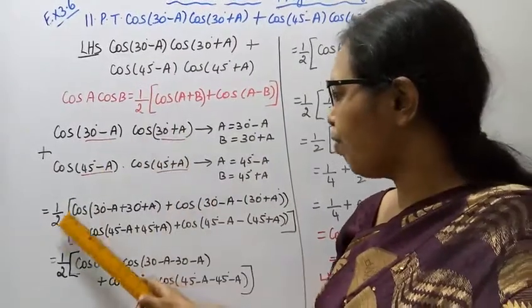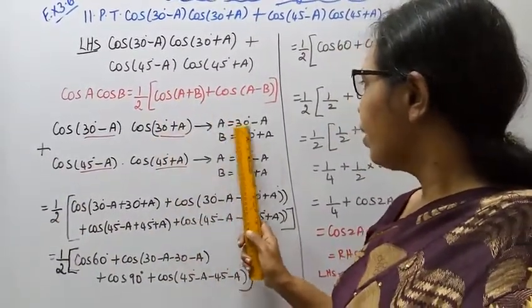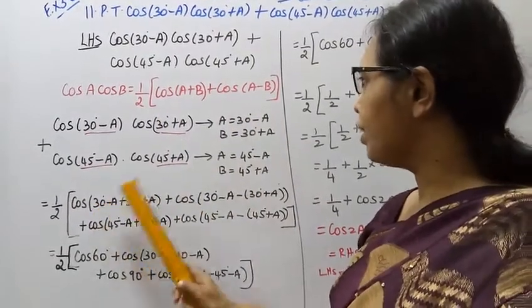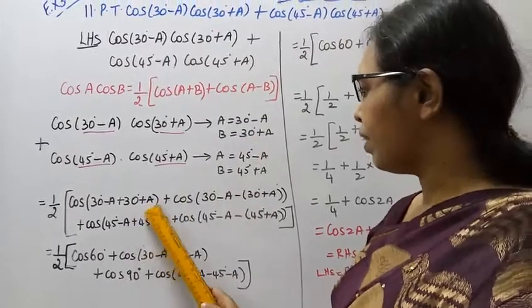We take half. Cos A is 30 degree plus A, 30 degree plus A, plus B, 30 plus A. B is 30 degree plus A.